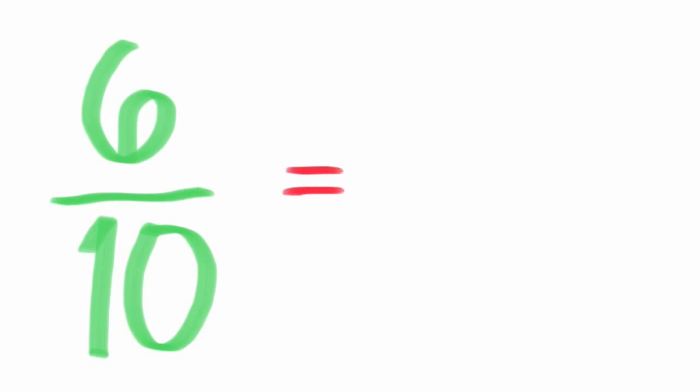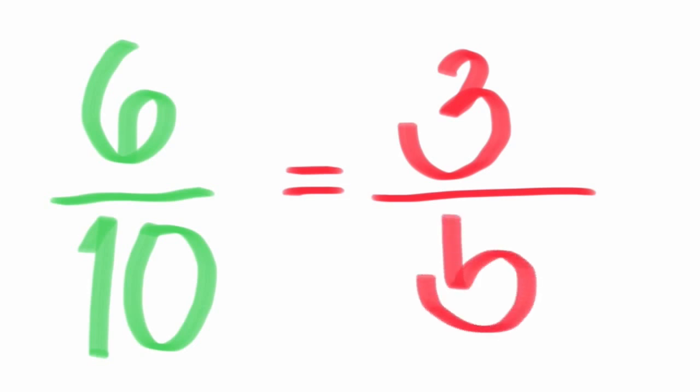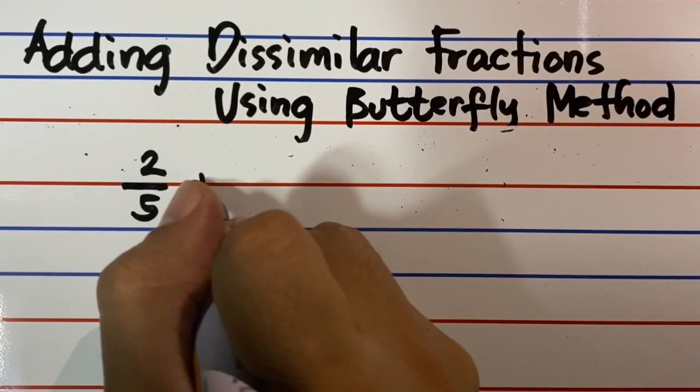If we divide 6 by 2, the answer is 3. If we divide 10 by 2, we get 5. Thus, the lowest term for 6 tenths is 3 fifths. Let's do this.